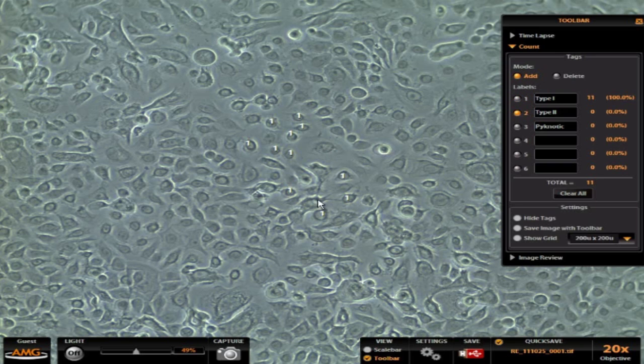I can switch over to type 2s, these will be the flatter type cells here. And for pyknotic cells, we can pick, say this cell here looks like it may be dying. So this is how you go in and manually create your cell counts.